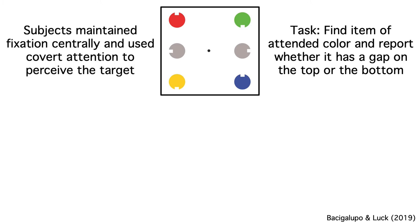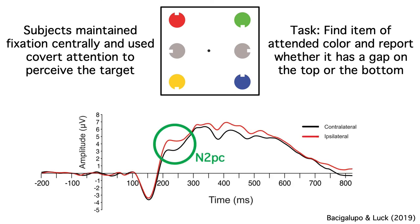They did this while maintaining fixation on the center of the screen so we could look at covert shifts of attention. As usual, we saw an N2PC component in the conventional ERP analysis. The voltage was more negative contralateral to the target from approximately 200–300 ms.